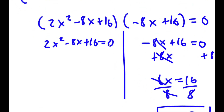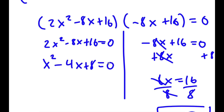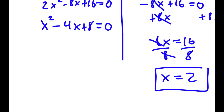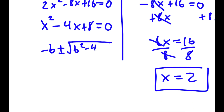Now for 2x squared minus 8x plus 16, I can factor out 2, so I get x squared minus 4x plus 8 is equal to 0. And now this is the same thing as negative b plus or minus the square root of b squared minus 4ac, all over 2a.